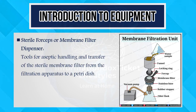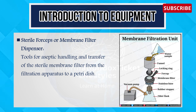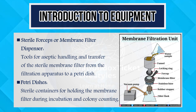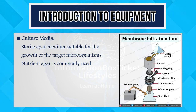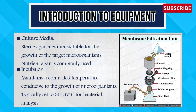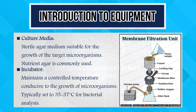Fourth, sterile forceps or membrane filter dispenser — tools for aseptic handling and transfer of the sterile membrane filter from the filtration apparatus to a Petri dish. Fifth, Petri dishes — sterile containers for holding the membrane filter during incubation and colony counting. Sixth, culture media — sterile agar medium suitable for the growth of the target microorganisms. Nutrient agar is commonly used. Seventh, incubator — maintains a controlled temperature conducive to the growth of microorganisms, typically set to 35 to 37 degrees Celsius for bacterial analysis.